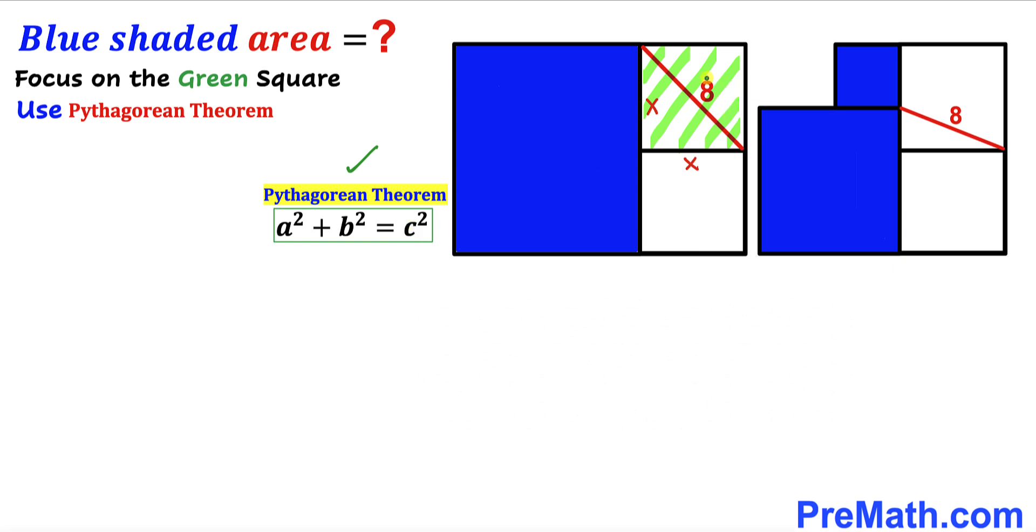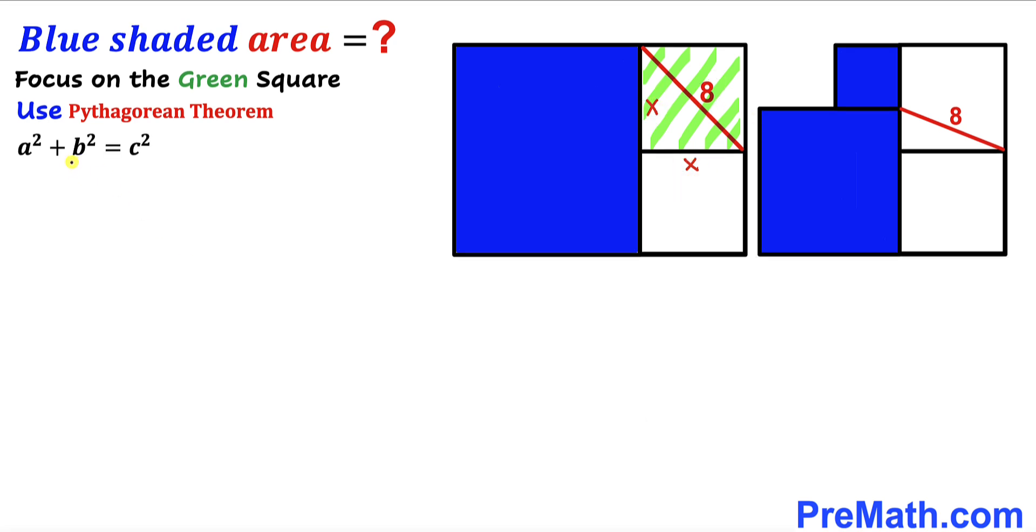Here's the Pythagorean theorem: a² + b² = c². In our case, the hypotenuse is 8 and our two legs are x and x. Let's fill in the formula: x² + x² = 8². Simplifying by combining like terms, we get 2x² = 64.